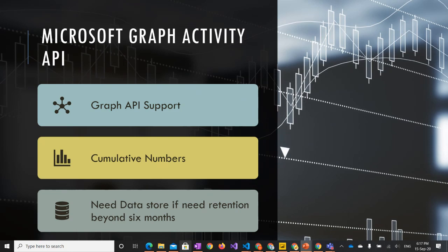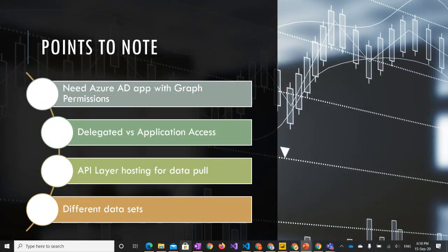The Graph API provides cumulative numbers and data can be stored for up to six months. If you want data beyond six months, you need a custom data store on your end. For example, if you want reports retrospectively from the date you start and want to keep data for one to five years, creating your own data store is helpful — get the data out of the Graph Activity API, put it in a data store, and generate reports from it. This needs custom effort and planning.